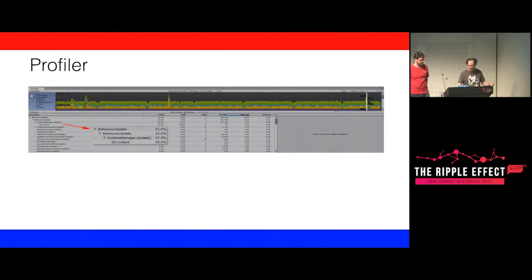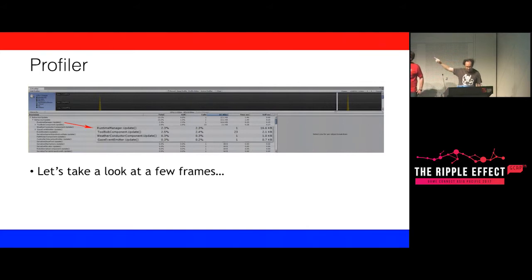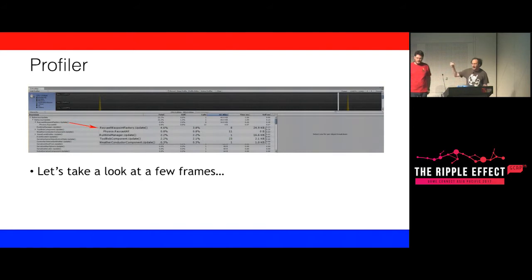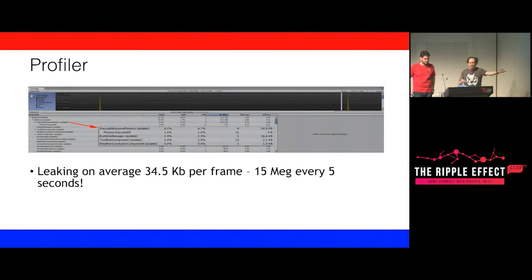You have to examine the frames before your GC gets called. Looking at a frame about 10 frames before that GC Collect, the runtime manager is leaking around 16 kilobytes, the Raycast Wave Factory is leaking about 25 kilobytes, and so on. We've got a bunch of stuff allocating a very small amount of memory every frame — about 36 kilobytes on average. The problem is that it adds up really fast: that's 15 megabytes every five seconds. That was what was causing the runtime to run out of memory and trigger a collection before allocating another block of system memory.